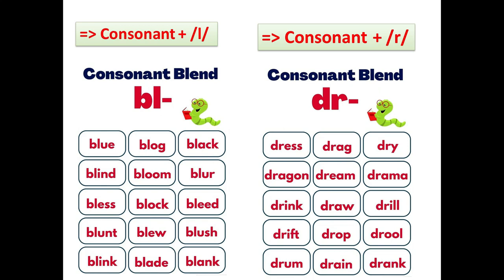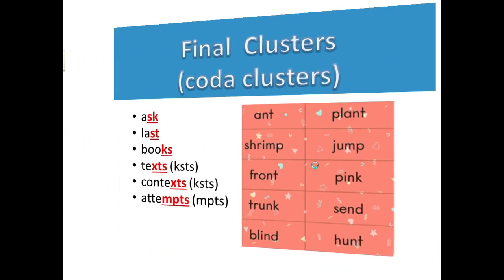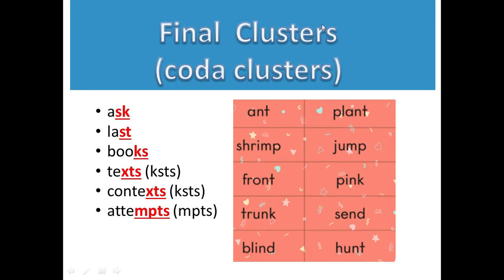So we have used consonant blends at the initial position: S blends, then BL blends, and then DR blends. That's how you make consonant clusters at the initial position. Now let's come to final clusters. Final clusters are also called CODA clusters and they come at the final position of a word.